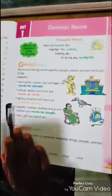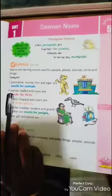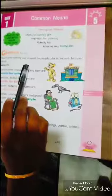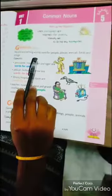So students, in previous classes, you all know about the noun. Nouns are the naming words, names of peoples, persons, things, places, animals, birds. All are called nouns.